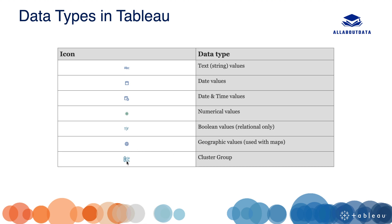Boolean values are represented by true and false (T/F), and geographic values and cluster values are represented by their respective symbols. Tableau automatically divides all the fields into dimension and measure based on their data types.